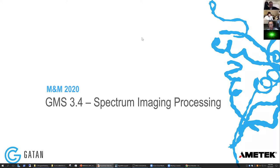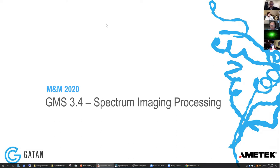So this evening we're going to work on some spectrum image data processing. We have quite a few new features in GMS 3.4 for processing data, and there are also some hidden tips and tricks that don't make it into the manual and don't get advertised too well. So Liam, who's an expert in analyzing data and knows all the ins and outs, is going to run through a couple of different scenarios for us to see some of these new features and learn some new tips and tricks.